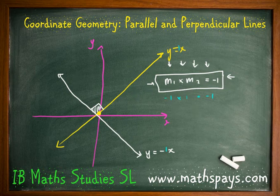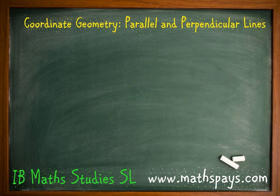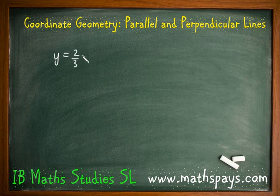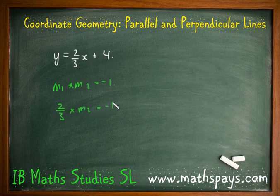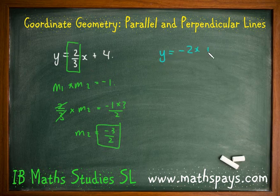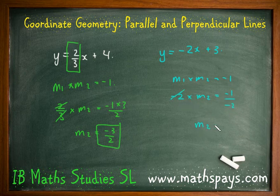Let's look at another example. We're given y equals two-thirds x plus 4. If we use m1 times m2 equals negative 1, then two-thirds times m2 equals negative 1. Multiplying by 3 and dividing by 2, we get m2 equals negative 3 on 2. Let's try another one: y equals negative 2x plus 3. Using m1 times m2 equals negative 1, we get negative 2 times m2 equals negative 1. Dividing by negative 2, we get m2 equals positive one-half.